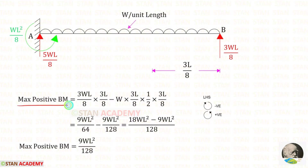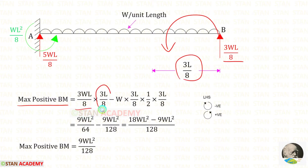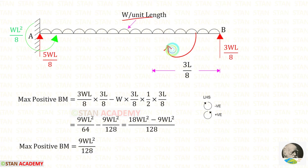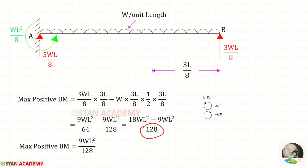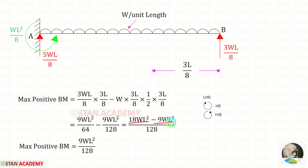Now let us find the maximum positive bending moment. RA acts anticlockwise (positive) at distance 3L/8; the UDL acts clockwise (negative). Multiplying with the distance and distance by 2: L×L gives L², 8×8 = 64, and 8×2×8 = 128. Taking LCM as 128: 18WL² − 9WL² = 9WL². So the maximum positive bending moment is 9WL²/128, occurring at a distance of 3L/8 from point B.